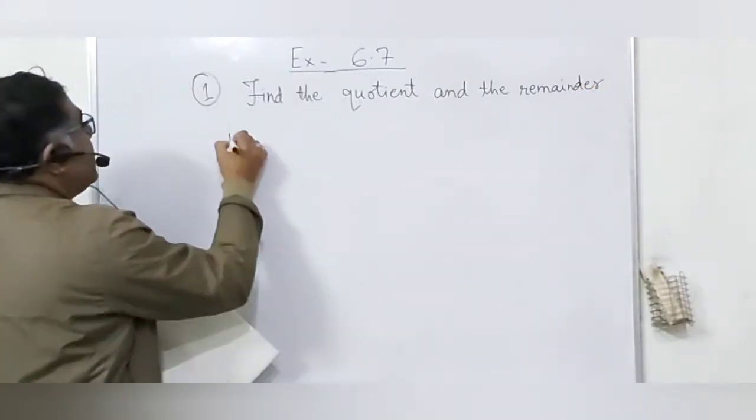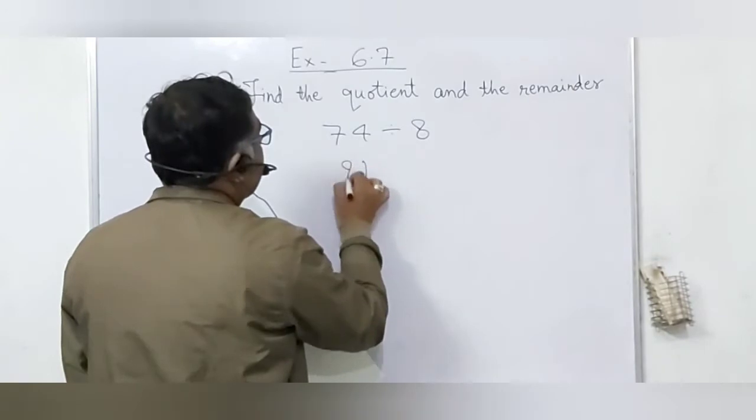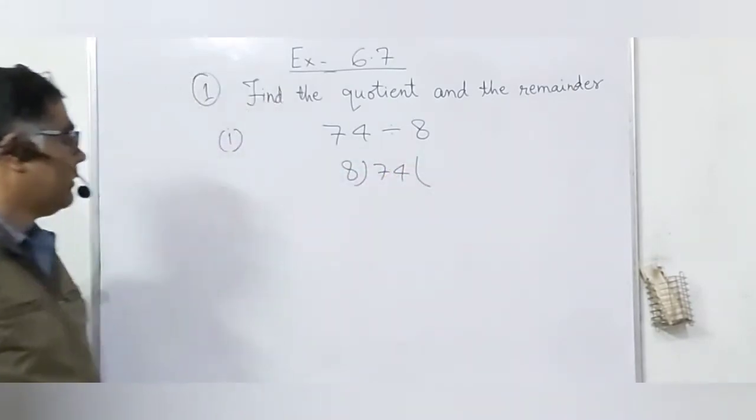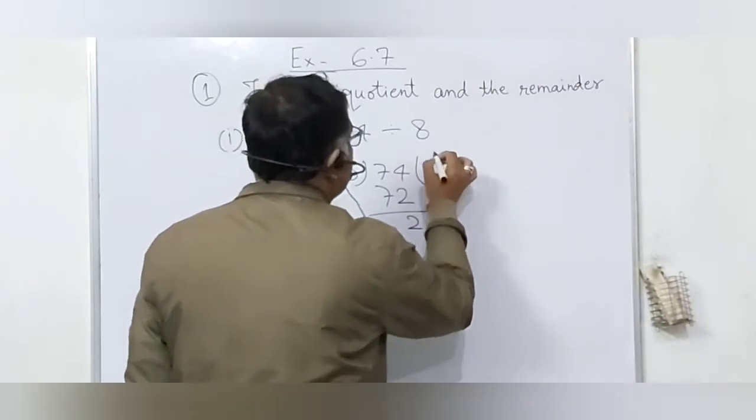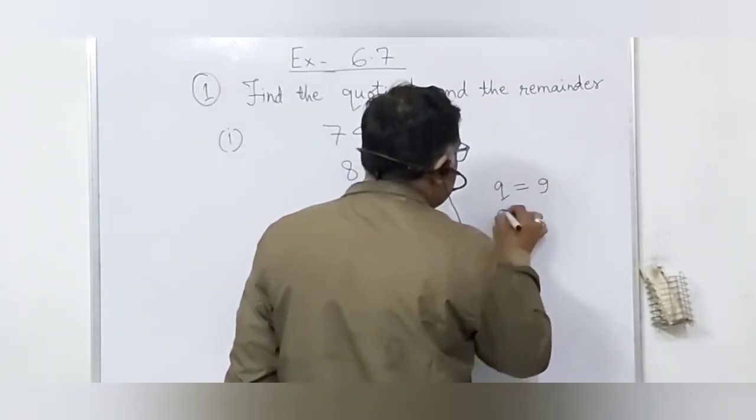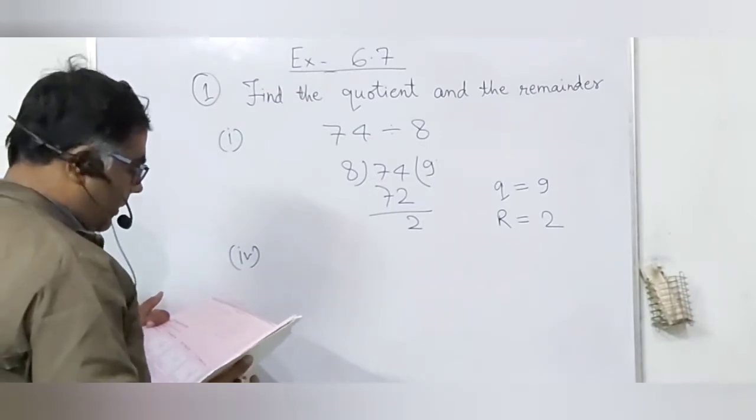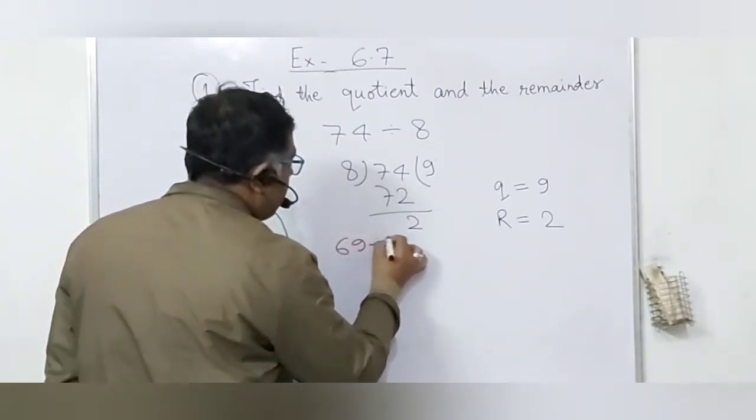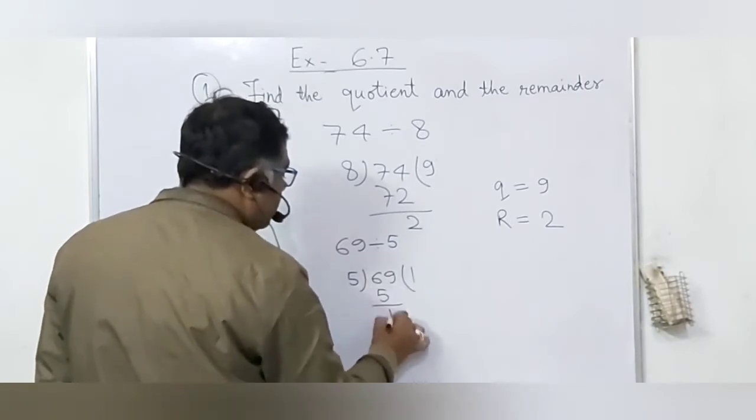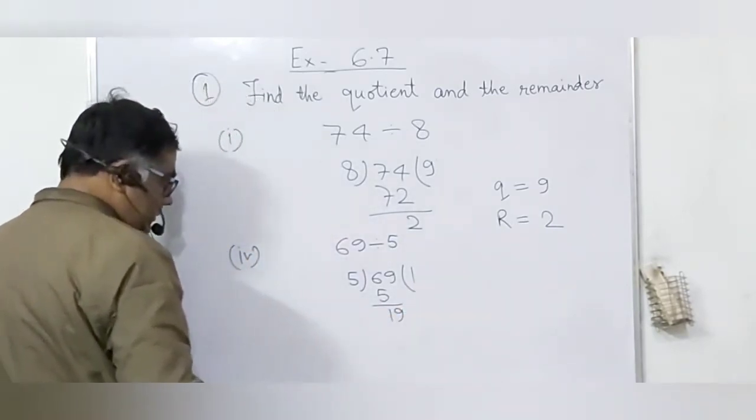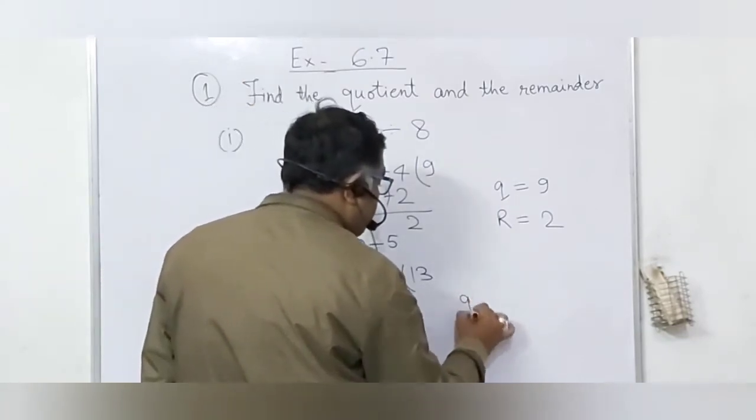Problem number 7: 74 divided by 8. 8 times 9 is 72. Quotient is 9. Remainder: 74 minus 72 equals 2. So quotient equals 9, remainder equals 2.